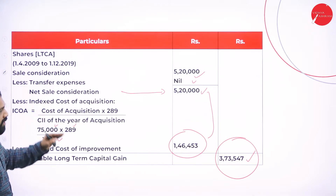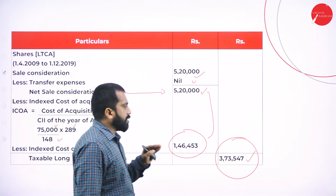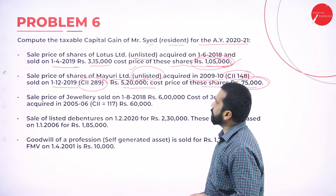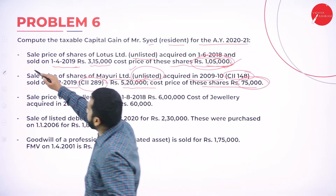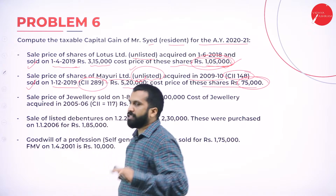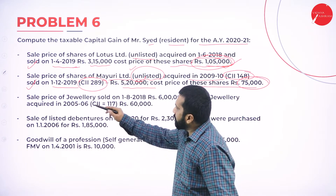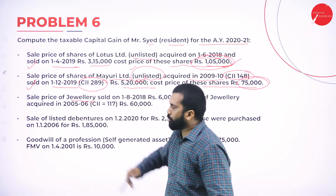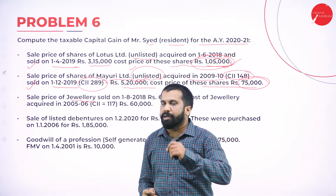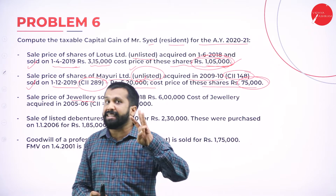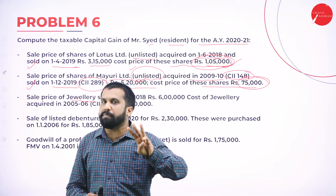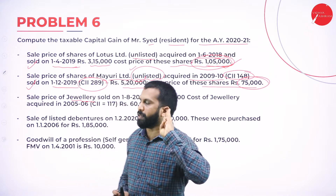We've done the unlisted shares — Lotus and Mayuri. Now the third one: sale price of jewelry. Jewelry is movable. What is the time period for movable assets? 3 years — 36 months. If it is movable, then it is 36 months.